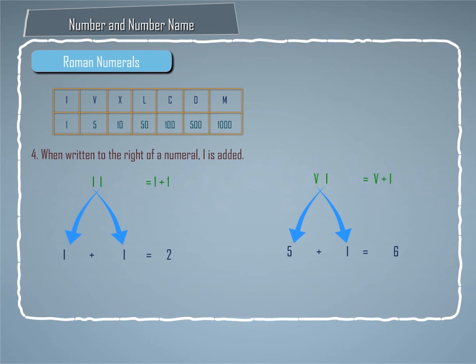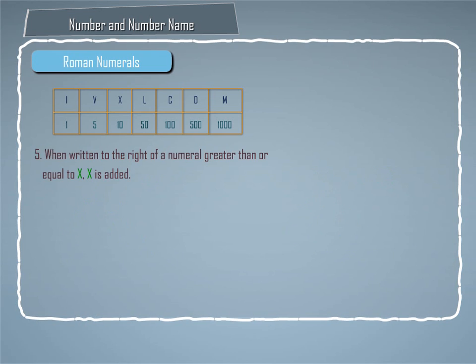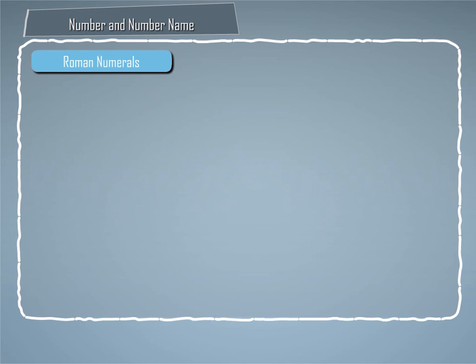Rule 5: When written to the right of a numeral greater than or equal to X, X is added. Example: XX equals 10 plus 10 equals 20. LXX equals 50 plus 10 plus 10 plus 10 equals 80. Let us take some examples to understand Roman numerals.